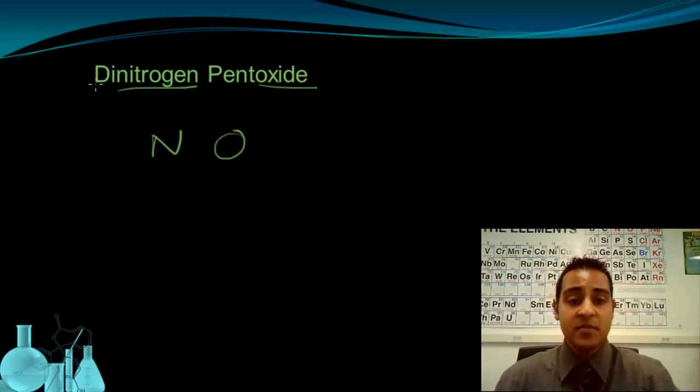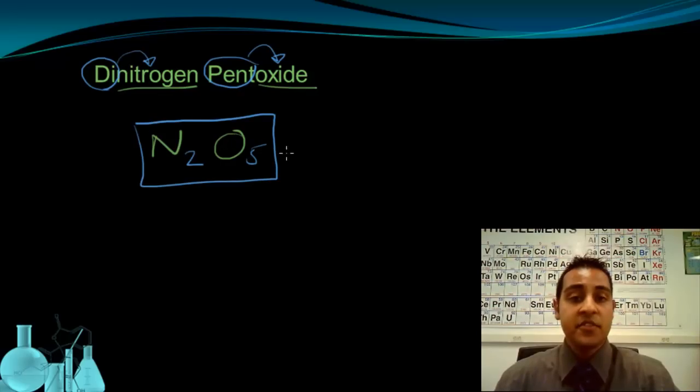The other piece of information given to me is in the prefixes. So the di tells me that there are two nitrogens, so I have N2. The pent prefix in front of the oxide tells me that there are five oxygens. So that's it, that's straightforward. Here's my formula for this molecular compound, for this covalent compound, N2O5.